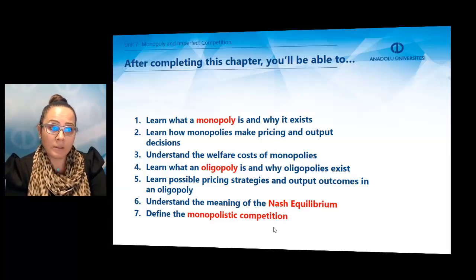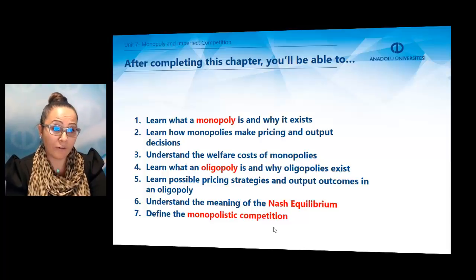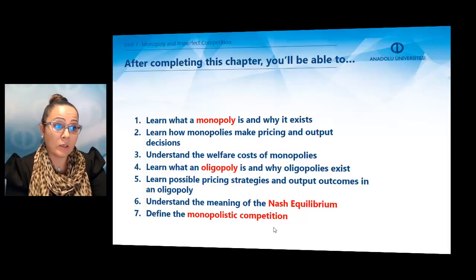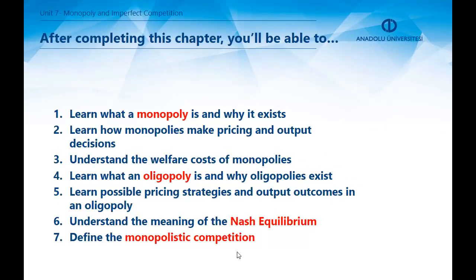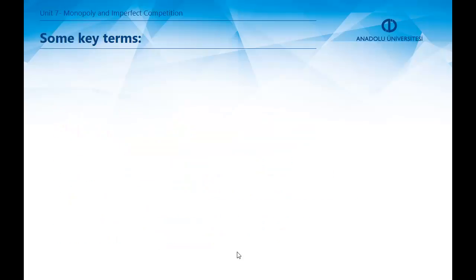You will learn how monopolies make pricing and output decisions, understand the welfare cost of monopolies, learn what an oligopoly is and why it exists, learn possible pricing strategies and output outcomes in an oligopoly, understand the meaning of Nash equilibrium, and also define monopolistic competition. Before we start, let's look at some key terms related to our subject.